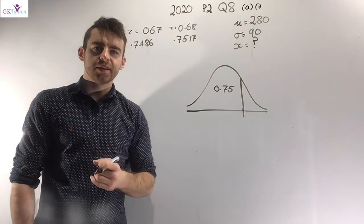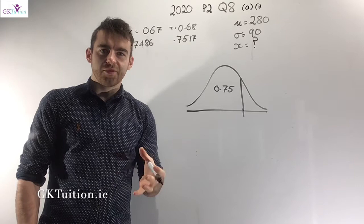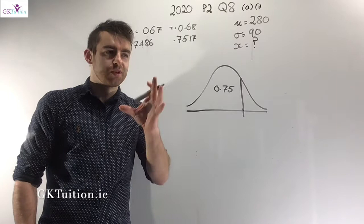In this tutorial I want to talk about the 2020 paper 2 question 8, which is all about inferential statistics. There were 70 marks going for this question in the exam, so this was the most significant question in the whole test.